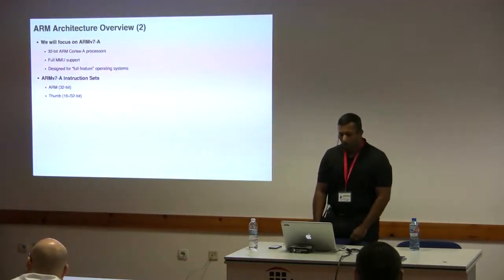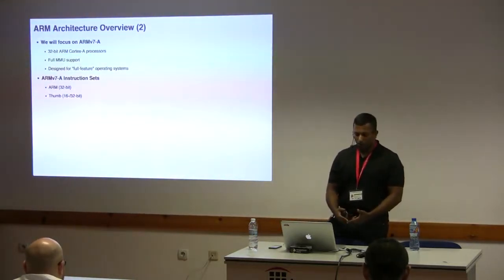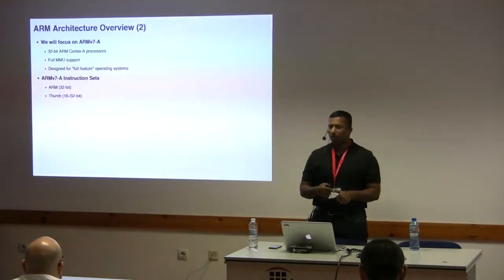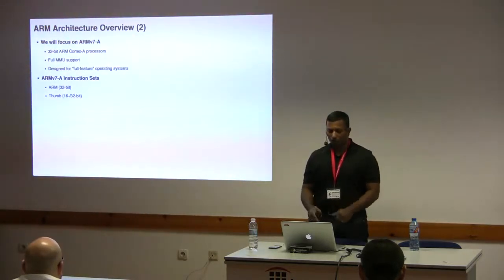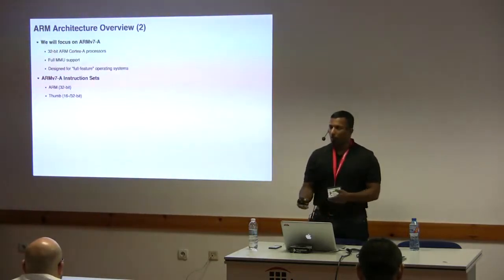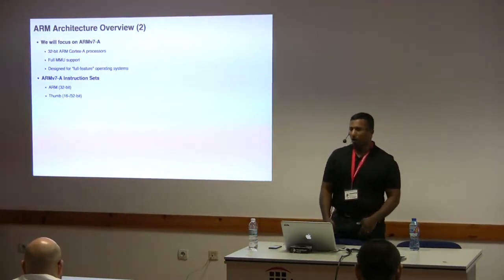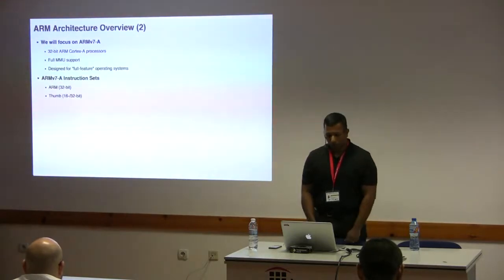ARMv7A has two instruction sets: the ARM instruction set (32-bit, the original) and the Thumb instruction set, which is a mix of 16-bit and 32-bit instructions. Originally Thumb was 16-bit, but with Thumb2 they added 32-bit instructions. The reason for Thumb is code density — better code density is good for caches and performance.